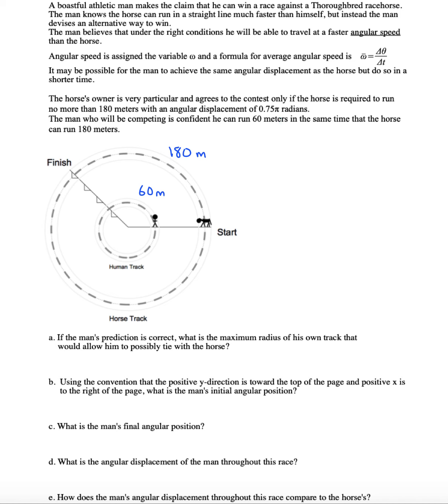Now an angular displacement of 0.75 pi radians is three quarters pi, which would be a 135 degree angle. And they're both going to complete that angle, but one of them has to run much farther in order to do it. First of all, let's figure out what the man's radius should be. So we want to find the radius for the man. Let's use the formula s equals r theta. Now the arc length is 60 meters and the theta is going to be 0.75 pi. The man needs a radius of 25.5 meters.